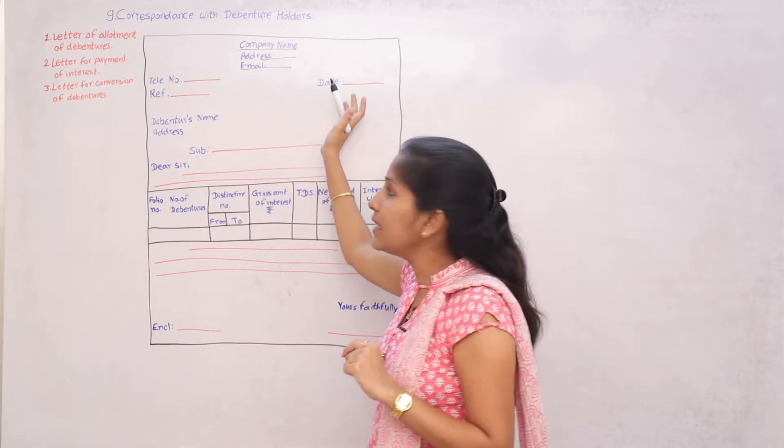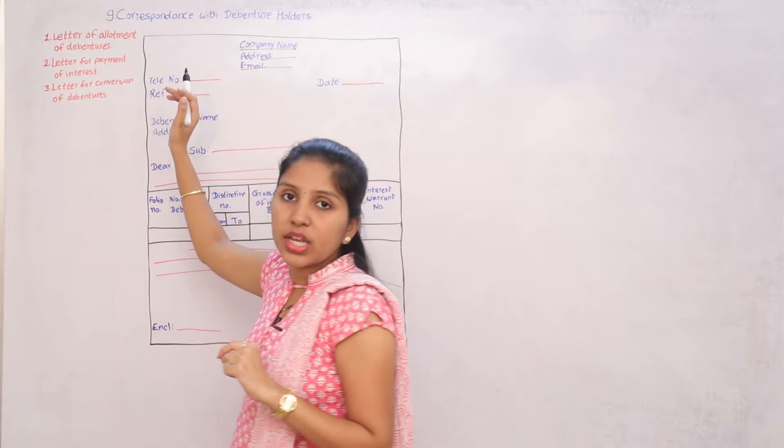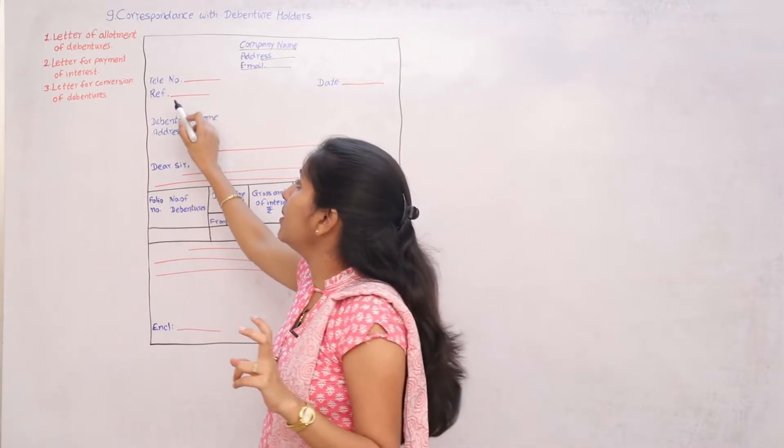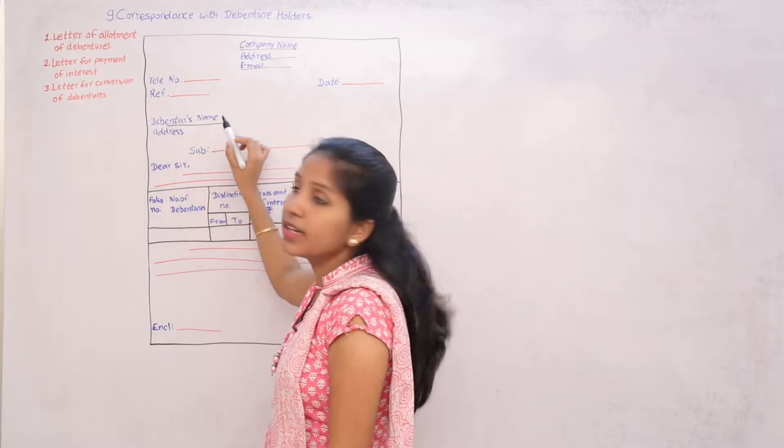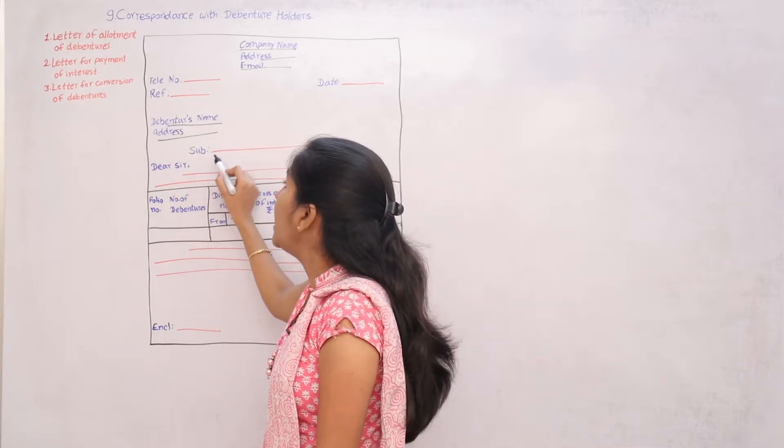After that, write the date on the right-hand side, and on the left-hand side put the company telephone number. After that, the reference number, then the debenture holder name and address.